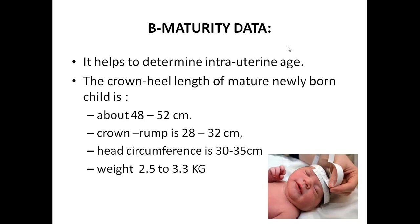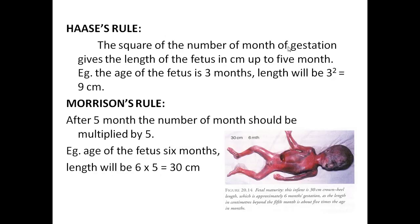Maturity data generally helps to determine the intrauterine age. There are certain parameters that are set: the newborn baby has a crown-heel length of about 48 to 52 cm, a crown-rump length of 28 to 32 cm, head circumference 30 to 35 cm, and an average weight of 2.5 to 3.3 kg.